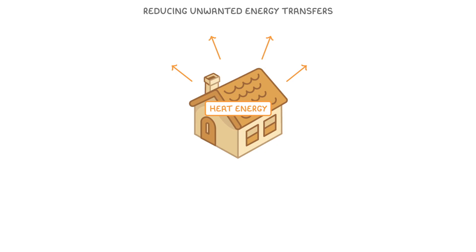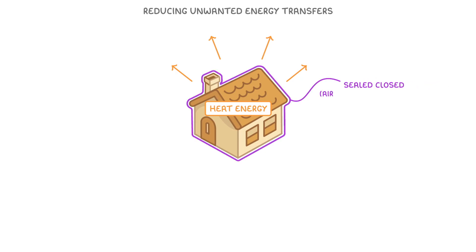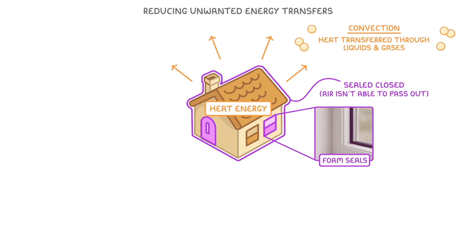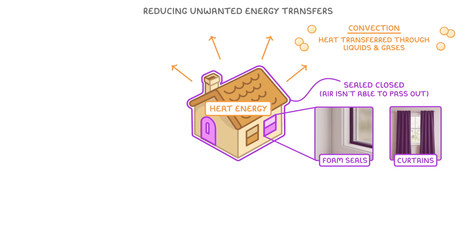First, we want to make sure that our house is sealed closed, to make sure that air isn't able to pass out of our home, because otherwise we would lose heat energy by convection, which is when heat is transferred through liquids and gases. This is why we have foam seals around our doors and windows, and one of the reasons why we draw our curtains at night.